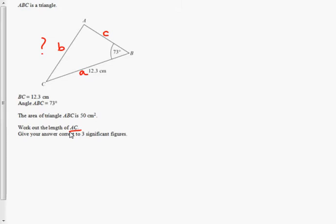We might have to use some other information from the question first. For example, the fact that the triangle is 50 cm² with area. We know that the area rule is that the area is equal to half the product of two of the sides multiplied by the sine of the angle between them.